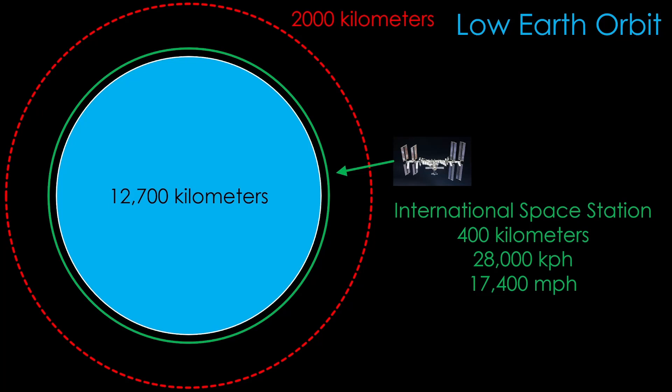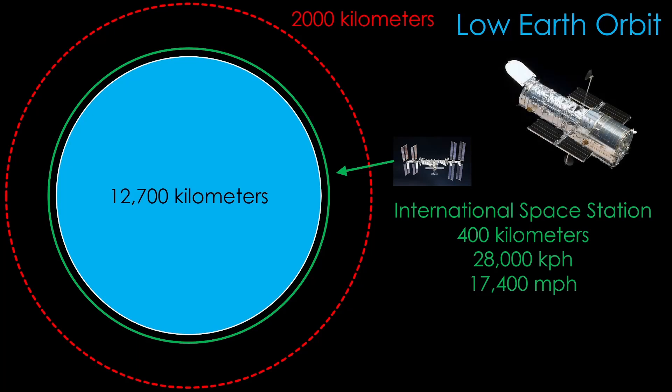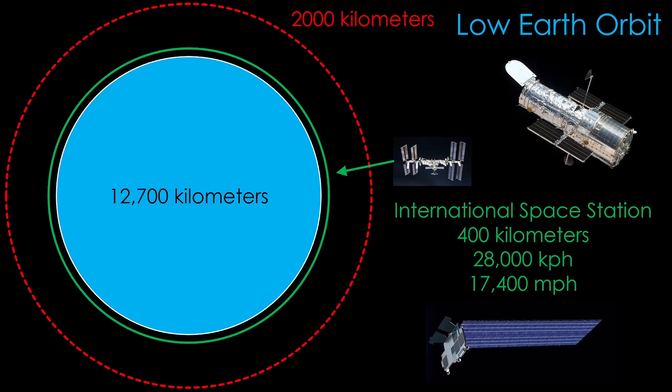This is also the orbital range where the Hubble Space Telescope lives at 560 kilometers, and the SpaceX Starlink satellites at 550 kilometers, 1150 kilometers, and 340 kilometers.